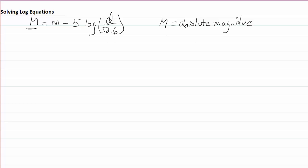There's a lowercase m in the equation. m is something called the apparent magnitude. I'll talk a little bit more about these soon.